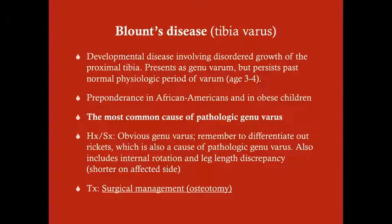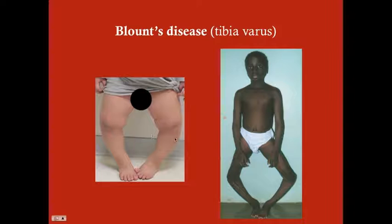With Blount's disease, the patient will have genu varum. It's important to differentiate from rickets, which is another possible and more easily reversible cause of pathologic genu varum. On physical exam, you'll also note internal rotation and a leg length discrepancy — the affected side should be shorter. Treatment for Blount's disease is surgical osteotomy.